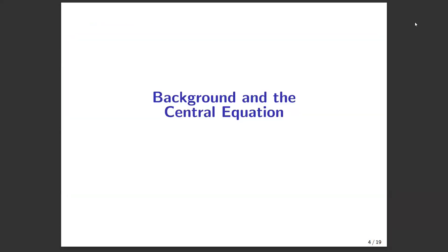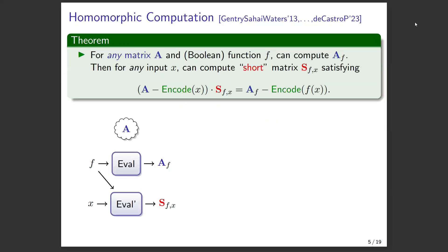Let's do some background. I'll try to minimize equations but failed horribly — there are many. If there's only one equation to take away, it should be what I'll call the central equation. This starts with the so-called third generation FHE scheme by Gentry, Sahai, and Waters from 2013. It's been used many times, with different properties extracted and variants produced. What I'll show is not quite what the original GSW paper highlighted, but everything is implicit inside GSW 2013.